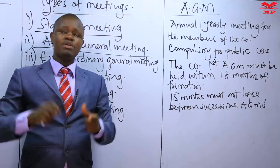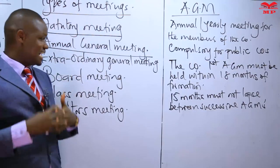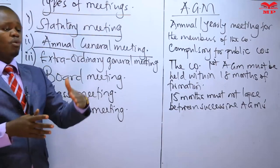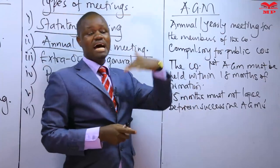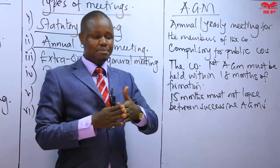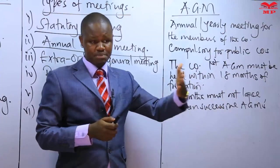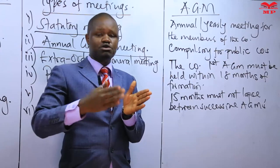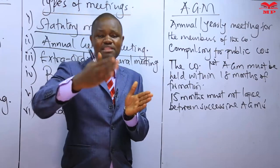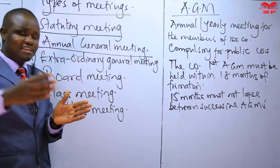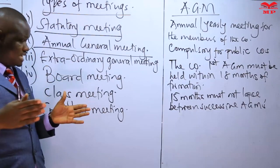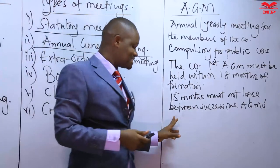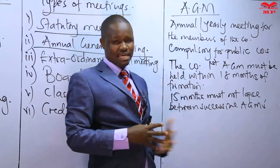The 15-month rule for successive AGMs exists because part of the business transacted at the AGM is the adoption of the company's financial statements, which are reported annually. We imagine a 12-month period, and then three additional months are allowed for the company to prepare and present those financial statements to the members.